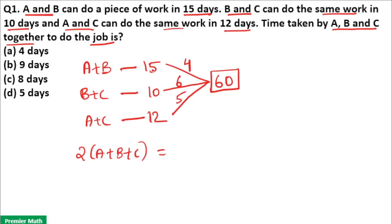Efficiency is here 4 plus 6 plus 5. A, B efficiency 4, B, C efficiency 6, A, C efficiency 5. If you add all these together, there is 2 into A plus B plus C which is equal to 15.